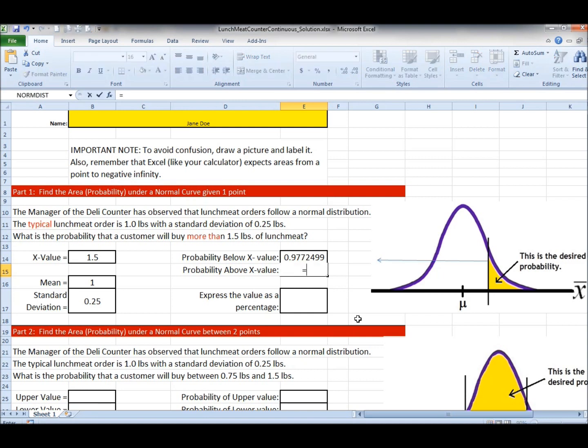In Excel all functions start or formulas start with an equal sign. One, which is the entire probability, minus what I've calculated in this previous cell. Now I have the probability.